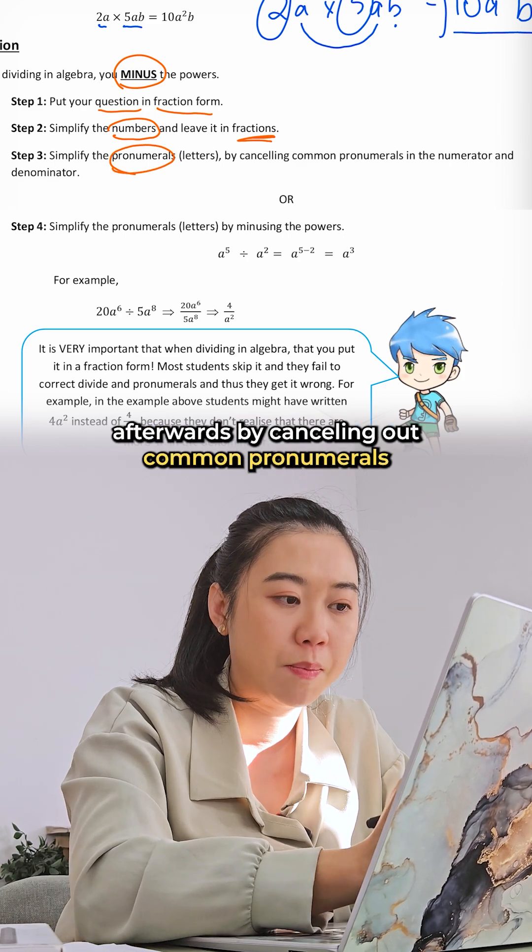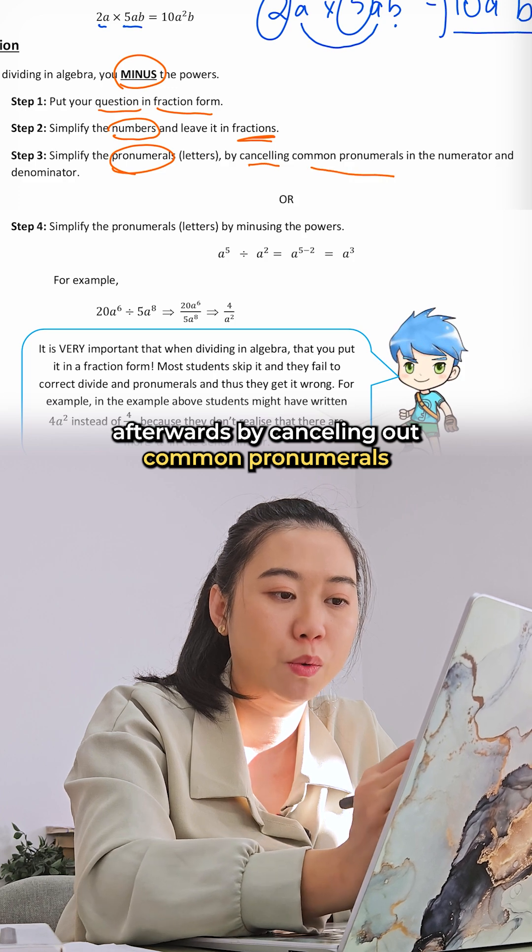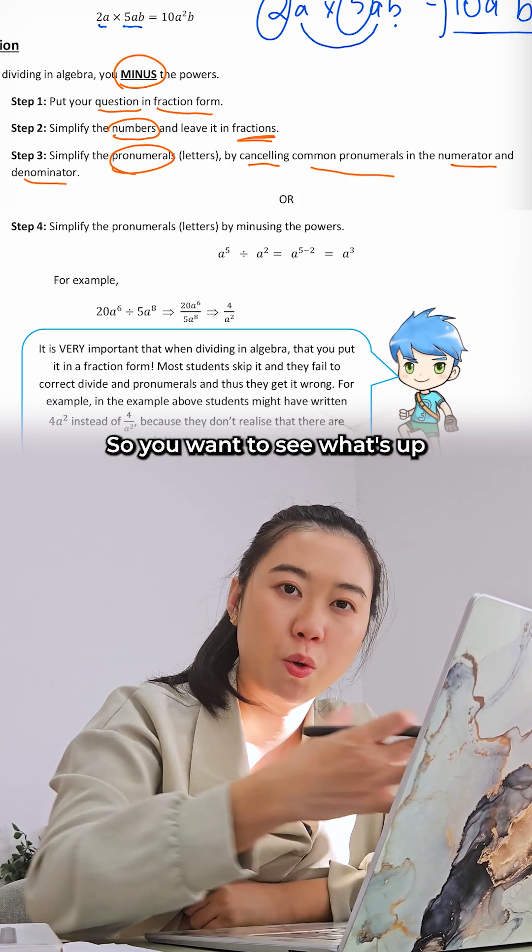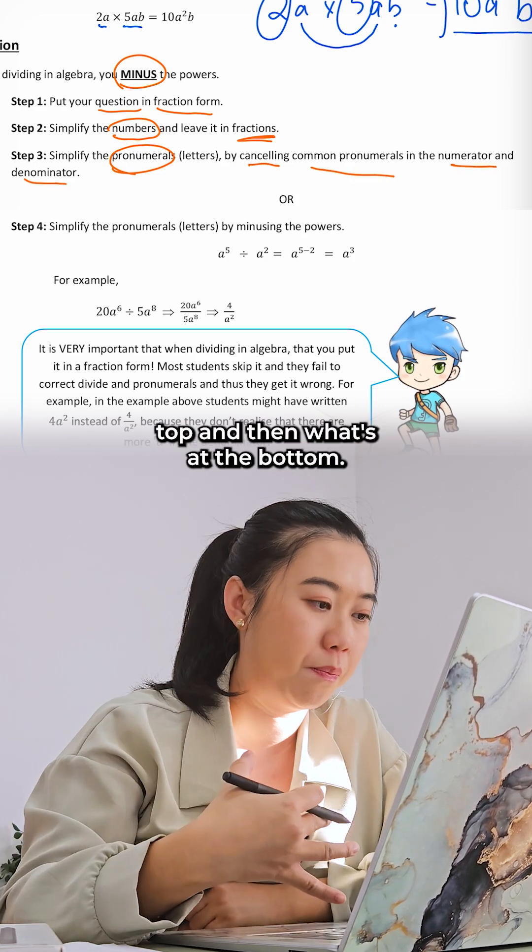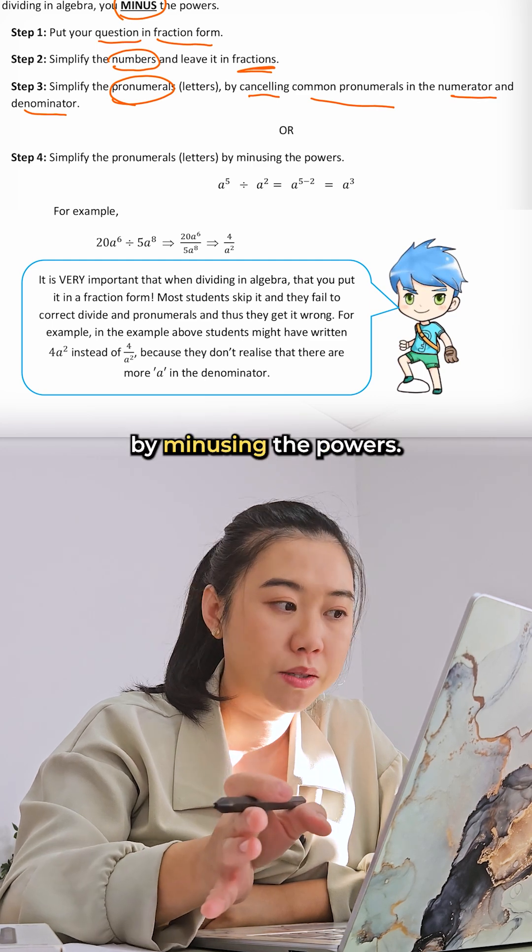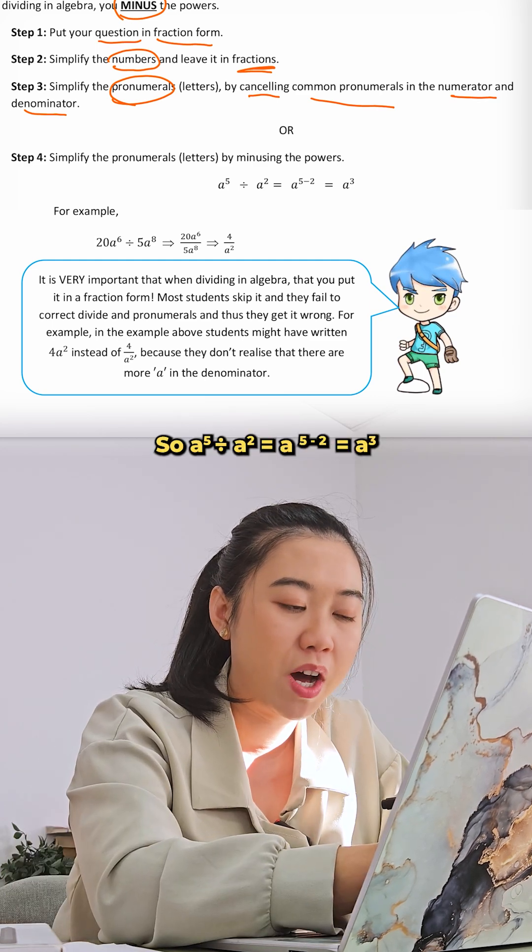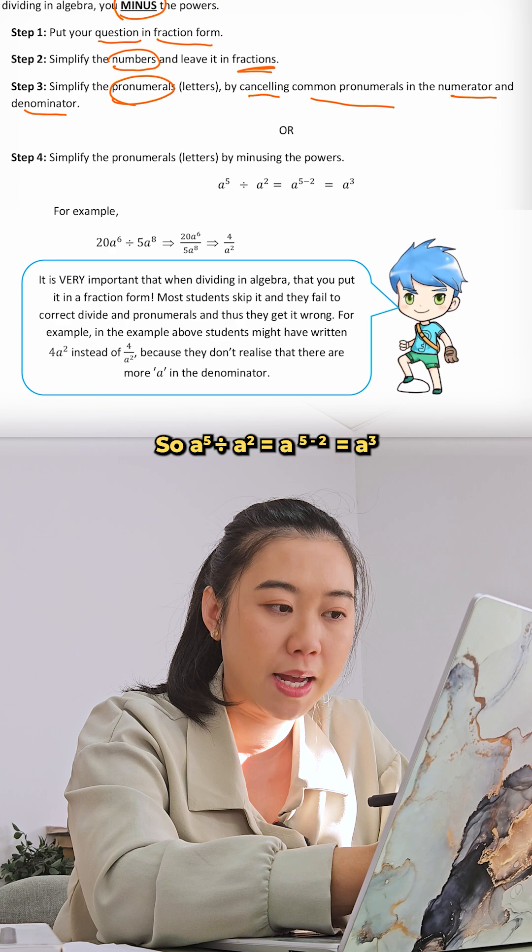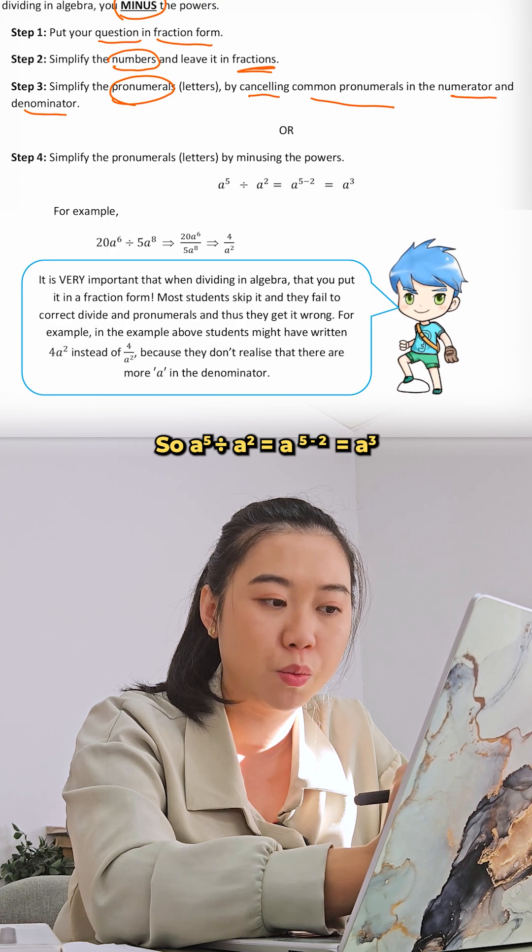You want to see what's at the top and then what's at the bottom. Simplify the pronumerals, or letters, by minusing the powers. So a to the power five divided by a to power two is equal to a to the power of five minus two, which is a to power three.